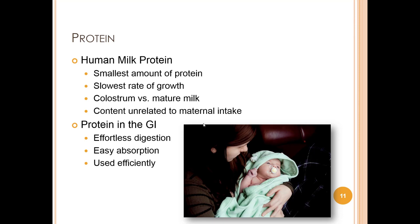Human milk contains the smallest amount of protein in the animal kingdom, which is why humans have the slowest rate of growth in the animal kingdom. The milk composition of each species is directly related to growth and development needs. Protein is comprised of chains of amino acids — long chains of hydrogen, carbon, oxygen, and nitrogen atoms. The nitrogen, and in some cases sulfur, is what makes protein distinct. Protein is used for growth, development, immunity, and energy.